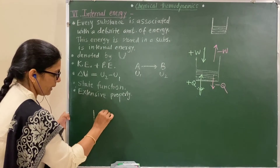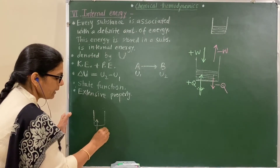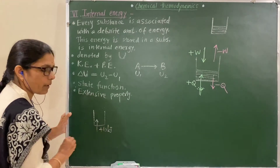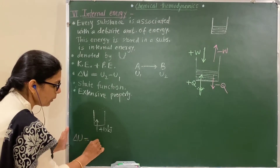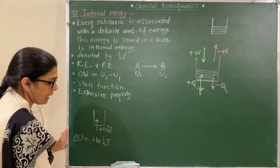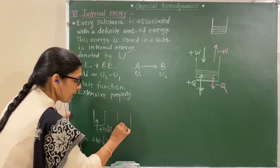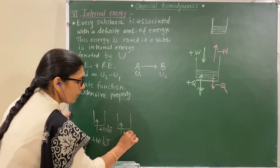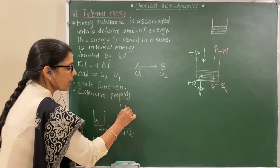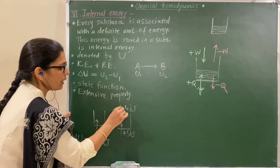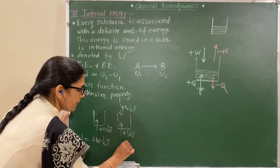Example 1: Heat added is plus 10 kJ. Therefore delta U equals plus 10 kJ. Example 2: Heat added is plus 5 kJ, and work done on the system is 10 kJ (plus). Therefore delta U equals plus 5 plus 10 equals plus 15 kJ. Example 3: Work done by the system is 20 kJ (minus). Therefore delta U equals minus 20 kJ.